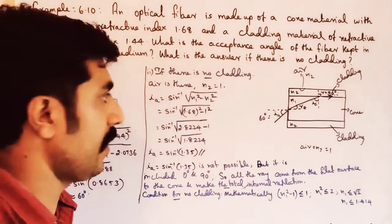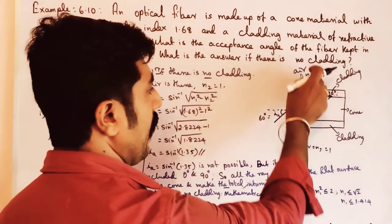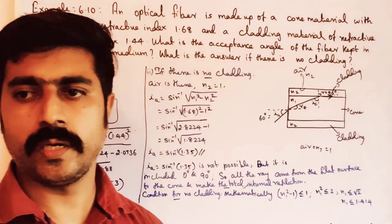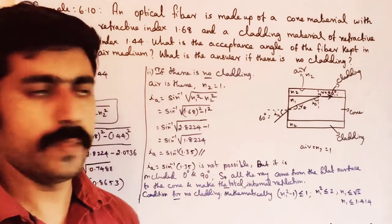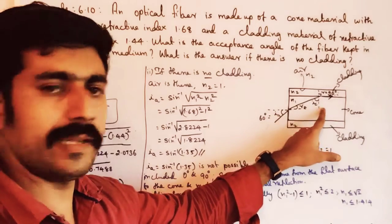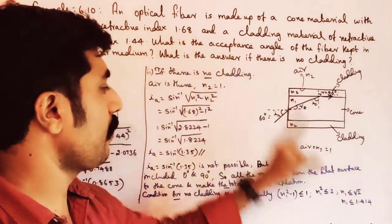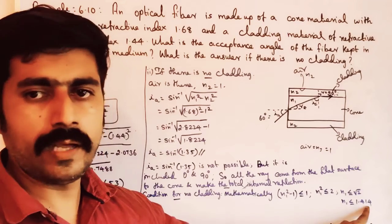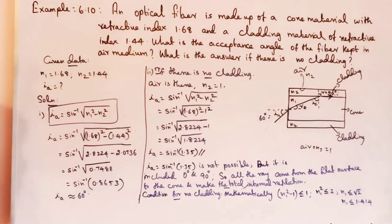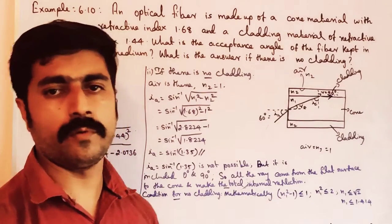The refractive index of the core must be greater than or equal to 1.414. In this problem, the core refractive index is 1.68, which satisfies this condition, so total internal reflection occurs without cladding. The cladding value was 1.44. Thank you.